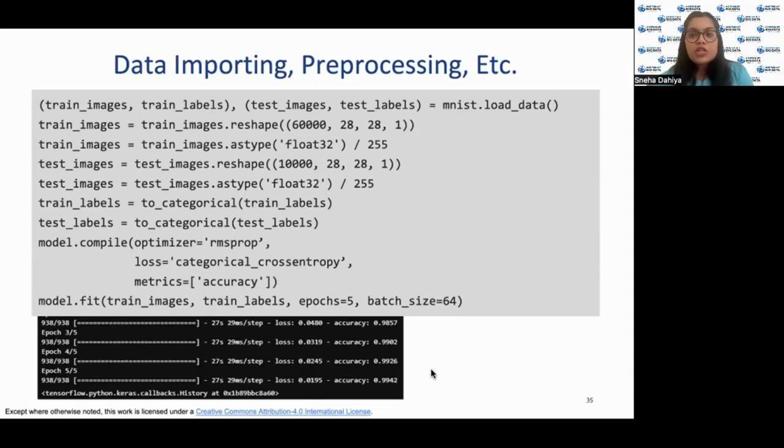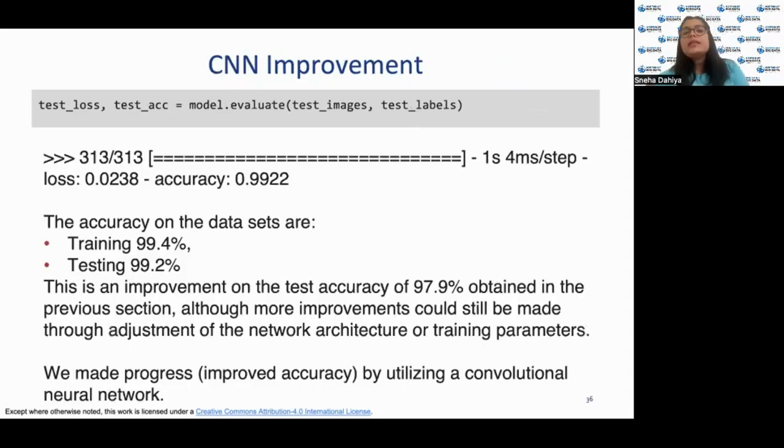But to cross-check about overfitting, we'll need to see the test set accuracy. The test set accuracy now using convolutional neural network is 99.2%. That means there is an improvement of test accuracy from 97.9% as compared to the previous section. Although we could have made more improvements by changing the parameters, for example, the number of nodes, the number of layers, the number of parameters. But we have made a significant progress in terms of accuracy, and this is a good model.